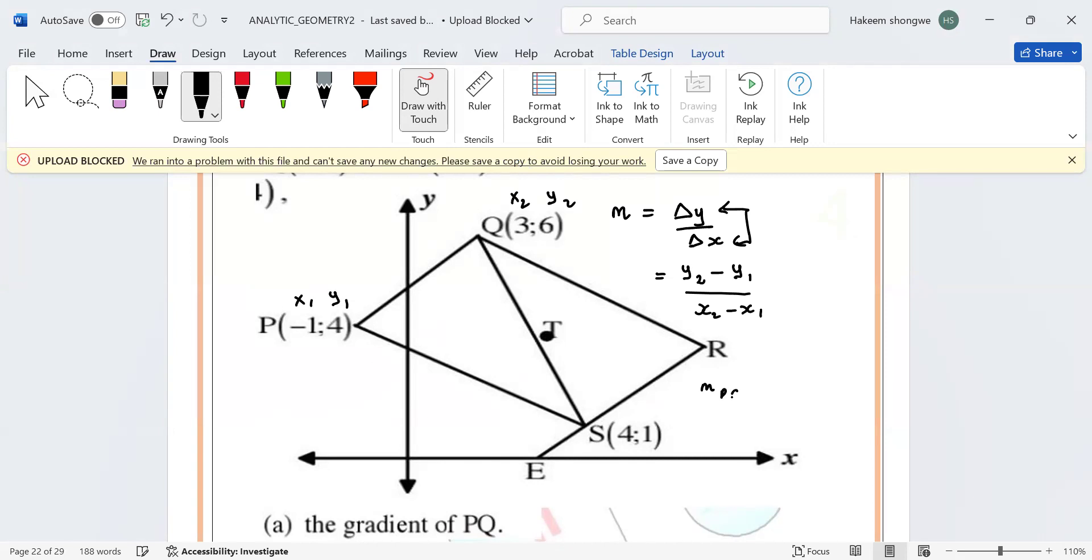Six minus negative four divided by three minus negative one. So x₁ is negative one. Six minus negative four gives... well, six minus four is two. Then three minus negative one: negative times negative gives positive, so 3 plus 1 gives four. So the gradient of PQ is two over four.